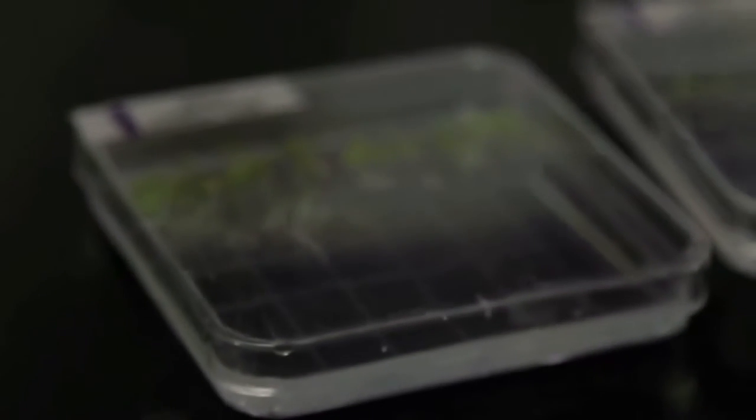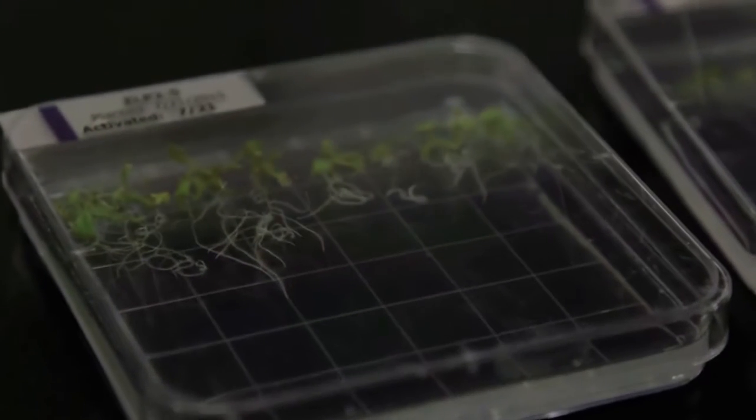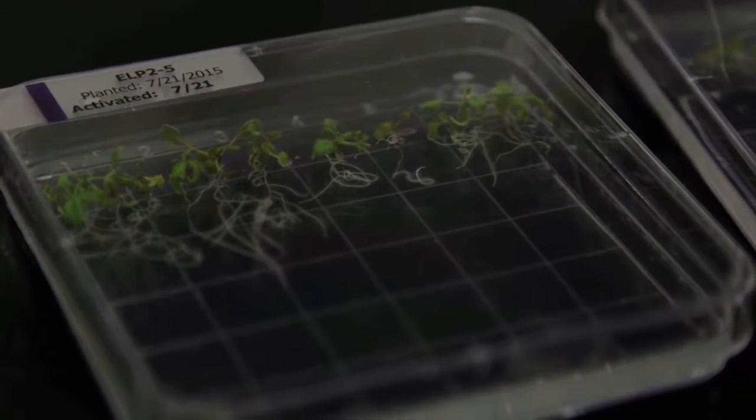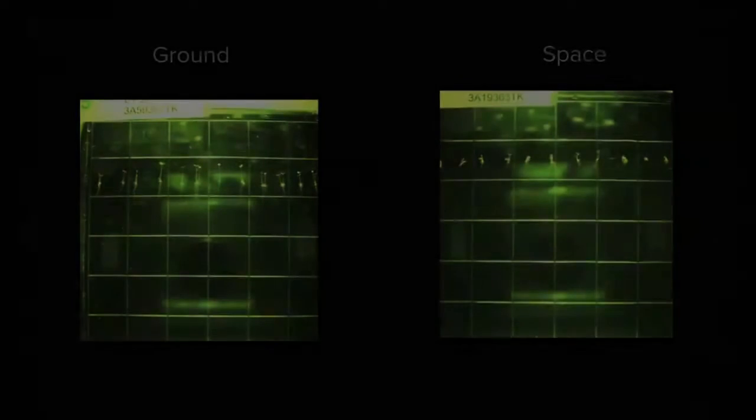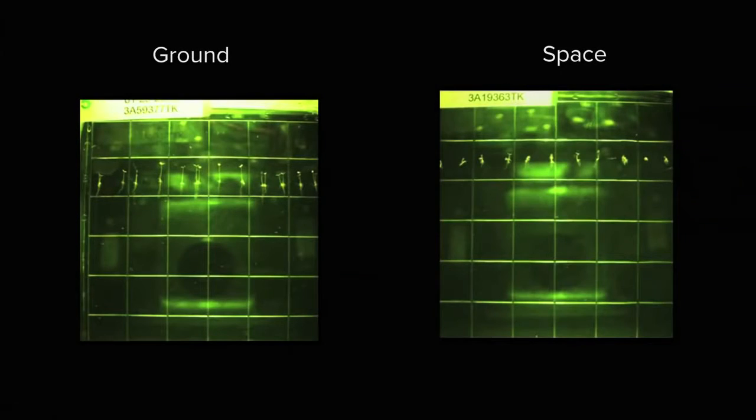One idea would be that in the absence of gravity, the plant roots would simply wander around aimlessly. Another expectation might be that if light was a strong enough cue, they would simply grow in a single direction away from the light. At first, the space plants grew down the plate like they would on Earth, but then the Arabidopsis that were grown further from the light did something different.